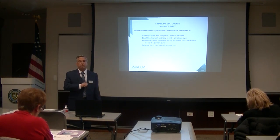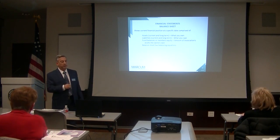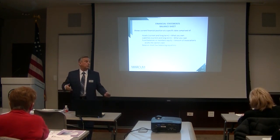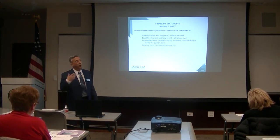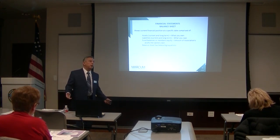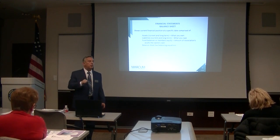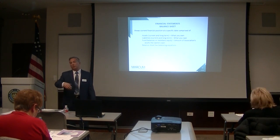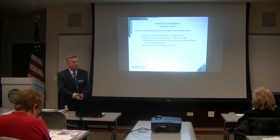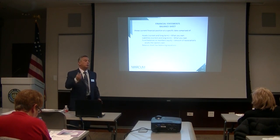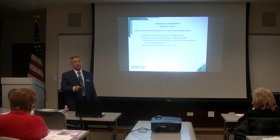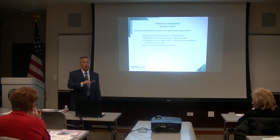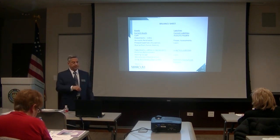There are two parts of a financial statement: the balance sheet and the income statement. The balance sheet has your assets — what you own — your liabilities — what you owe — and then your fund balance or members' equity, which is the true amount of what you actually own. Assets minus liabilities equals your true equity, which is the association's true net worth.